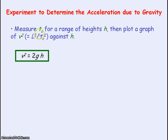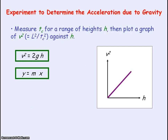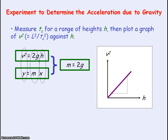We can measure t_C, the time for the card to pass through the light gate, for a range of heights, then plot a graph of v² against height h. This gives a straight line through the origin because v² is proportional to h. Comparing with y = mx, y represents v², x represents h, so the gradient m equals 2g. Therefore, the acceleration of free fall g equals the gradient divided by 2.